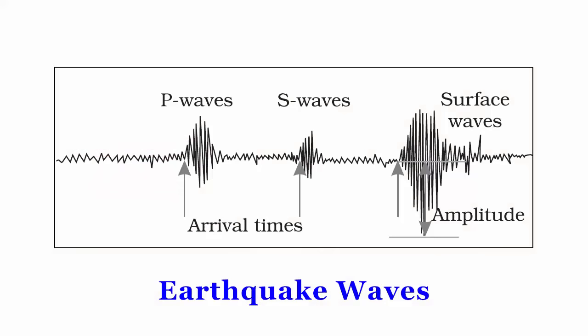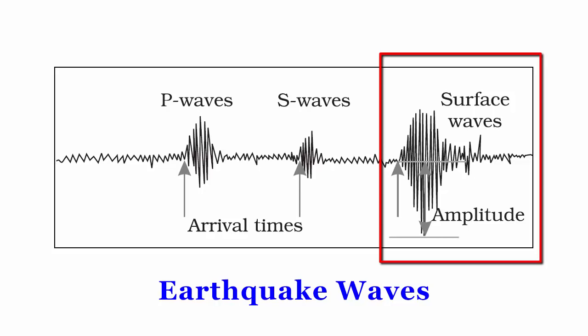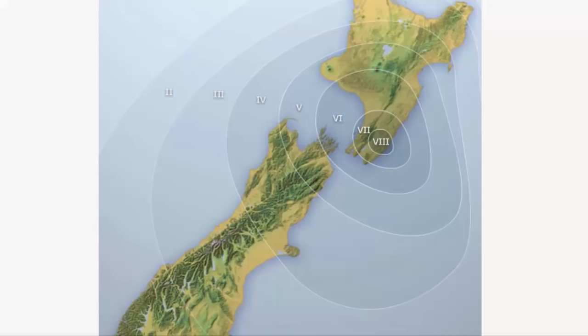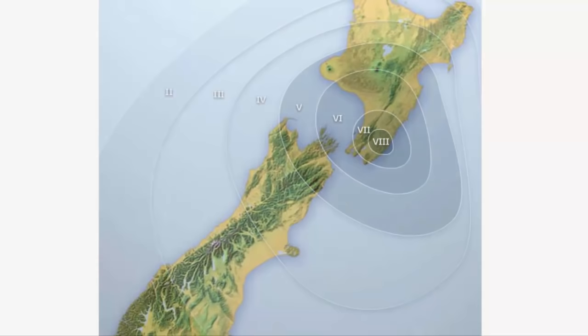Going back to this picture, after body waves — that is P and S waves — come the surface waves. The surface waves are the last to report on the seismograph. This wave spreads across the surface of the earth. These waves are also more destructive and damaging. They cause displacement of rocks and hence the collapse of structures occurs.